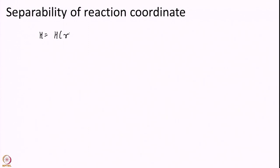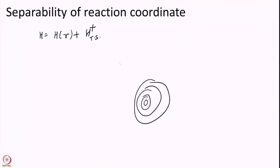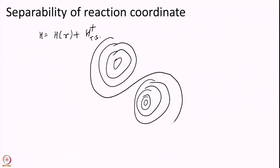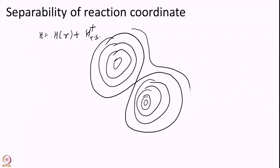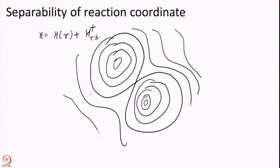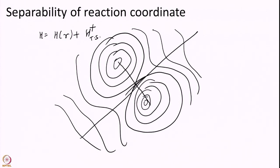The second assumption I want to discuss is the separability of the reaction coordinate — that H equals H along the reaction coordinate plus H along everything else. This is also an excellent approximation almost always. In classical mechanics, on a two-dimensional energy surface with the reaction coordinate and the dimension perpendicular to the dividing surface, this separability is almost always true. You might have some very exotic quantum mechanical phenomena where it does not hold, but it is fair to say this is one of those assumptions that is almost always valid.